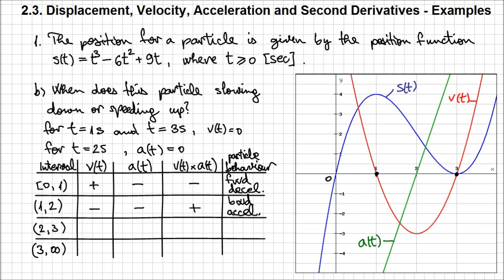On the interval (2, 3): velocity is still negative, but the acceleration is positive. The particle still moves in a backward direction, but it is decelerating because the acceleration opposes the direction of the velocity. Remember, these are vectors, so their directions matter. The product of velocity and acceleration is negative, confirming the backward decelerating motion.